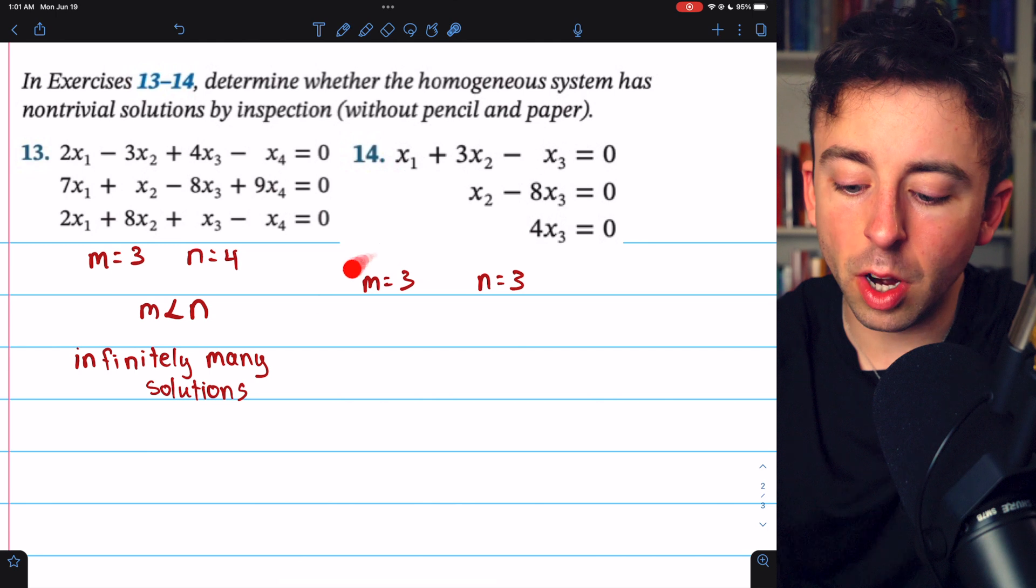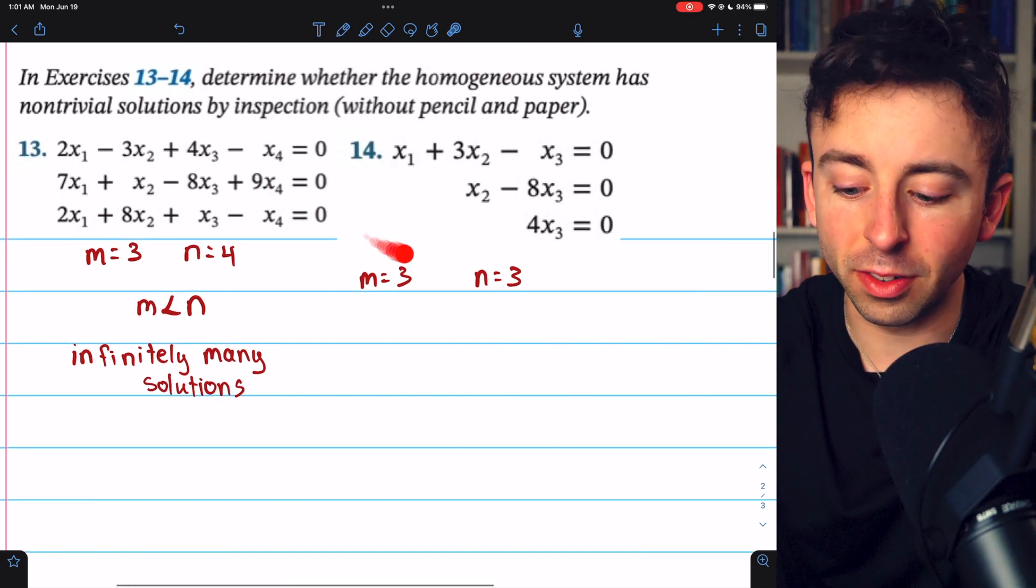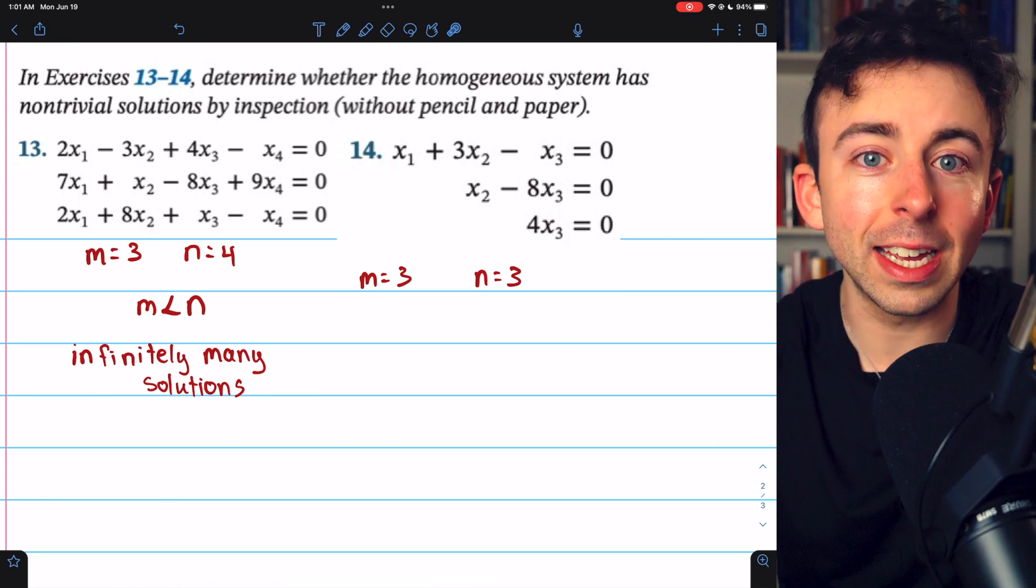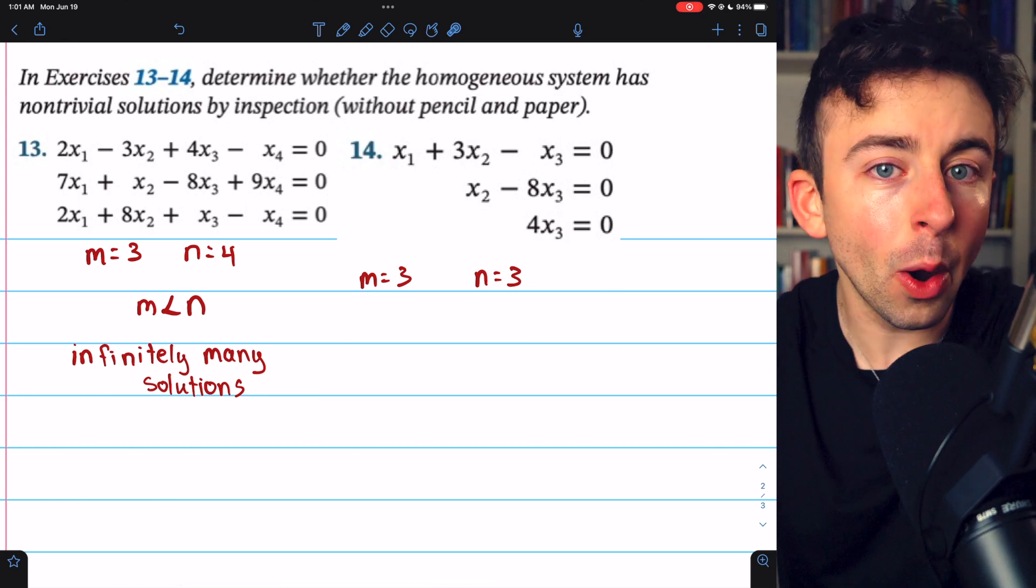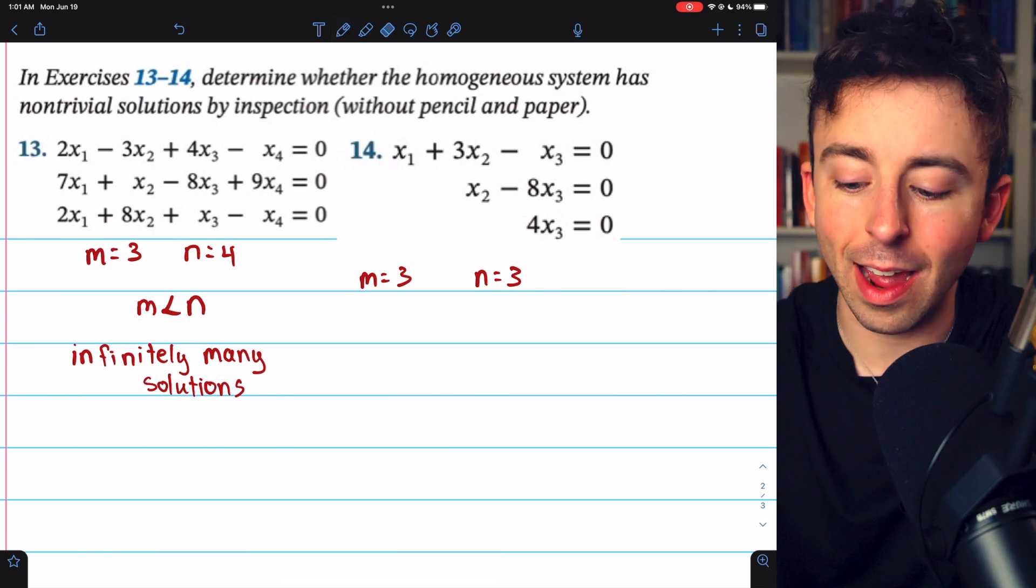Just because the number of equations and variables are the same here doesn't mean that this linear system for sure only has the trivial solution. However, it is pretty easy for us to check that indeed it does only have the trivial solution.